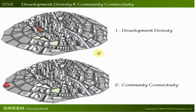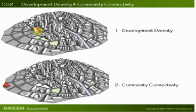Now there are two paths for achieving this credit. The first is Development Density and the second is Community Connectivity. The first is encouraging you to select sites within an existing urban fabric. The second deals with a special situation where the immediate surroundings of the site is low density, but the intent of the credit is still achieved.